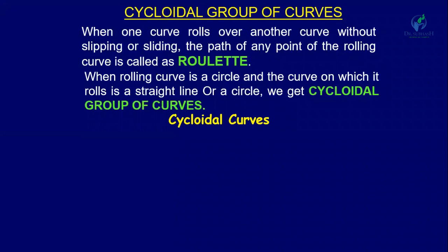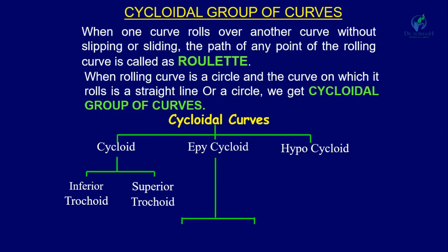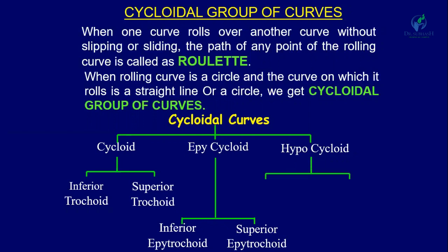Now, classification of cycloidal group of curves. There are three types of cycloidal curves: cycloid, epicycloid, and hypocycloid. Cycloid is classified into two different ways: inferior trochoid and superior trochoid. Similarly, epicycloid is classified into inferior hypotrochoid and superior hypotrochoid. These are the different types of cycloidal curves.